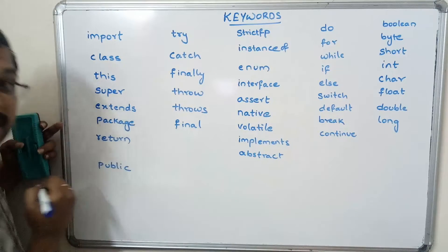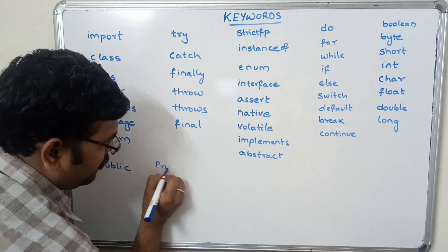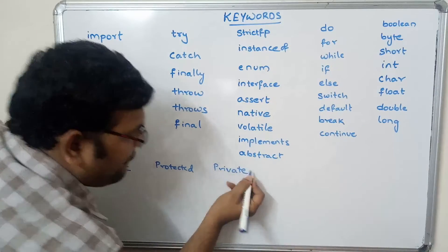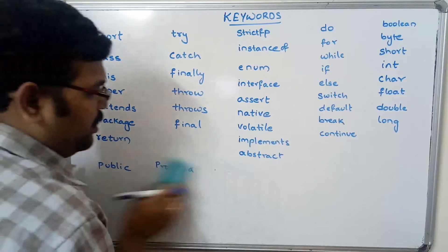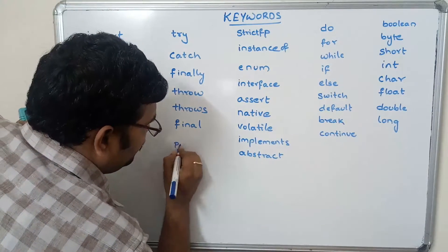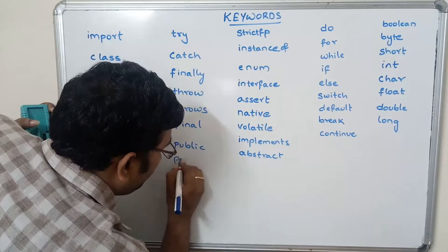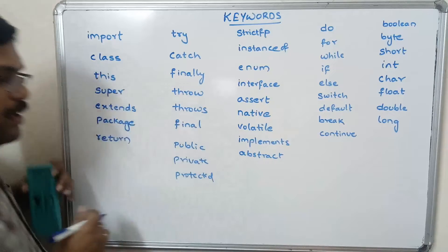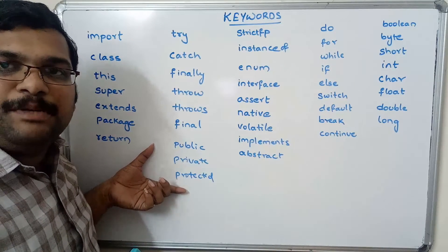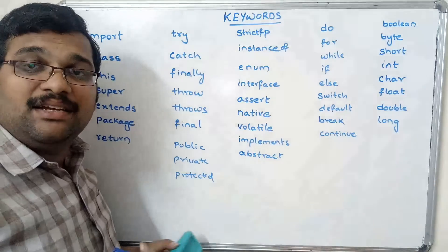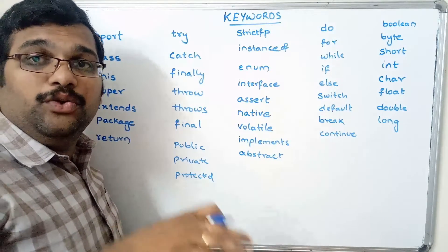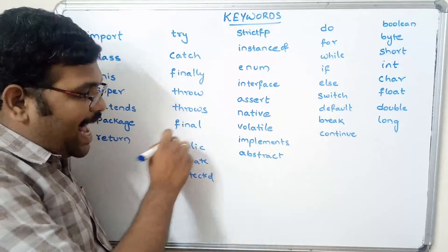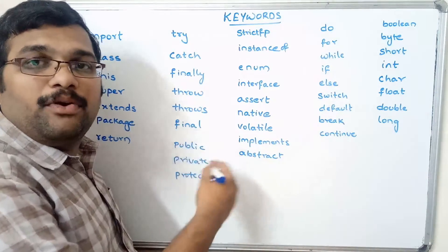Public, protected, and private are the three access specifiers. They control access to variables and methods — specifying which class can use which variables. These are the access specifiers: public, protected, and private.